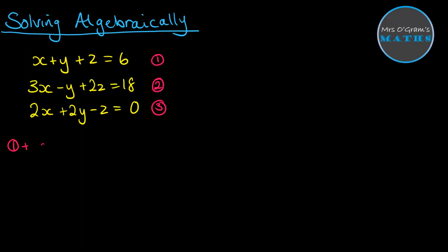So if I do one plus two, then I will get in the x's, I will get four x. The y's would be eliminated. That's why we're doing this. And then I get three z is equal to 18 plus six makes 24. Now I'm left with an equation that still has two unknowns in it, the x and the z. So I need another equation that has x and z in it so that I can eliminate those ones or one of them.